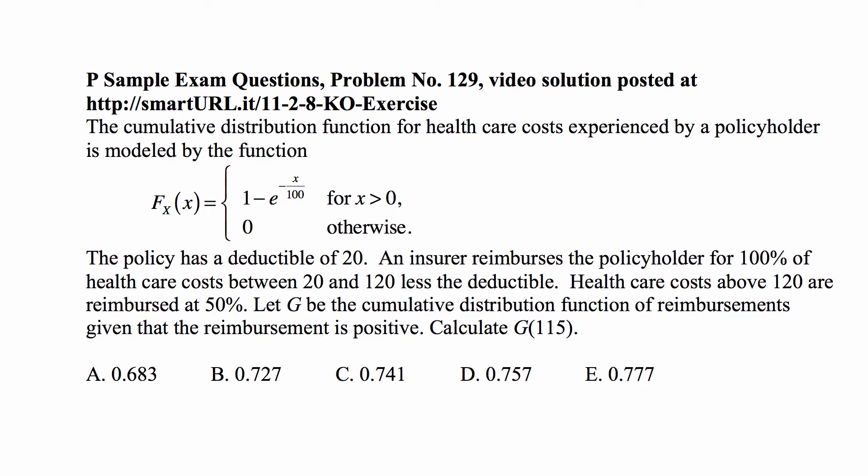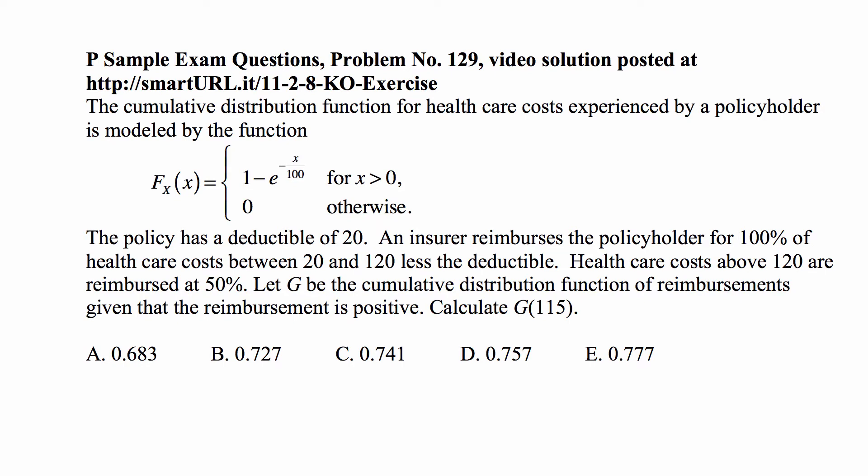Here is the exercise for today. The cumulative distribution function for healthcare costs experienced by a policyholder is modeled by F sub x of x equal to 1 minus e to the minus x over 100, for x greater than 0, and 0 otherwise. This is an exponential distribution with hazard rate 1 over 100 and with mean 100.